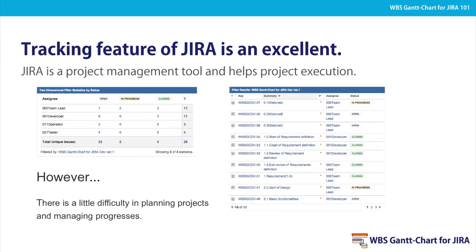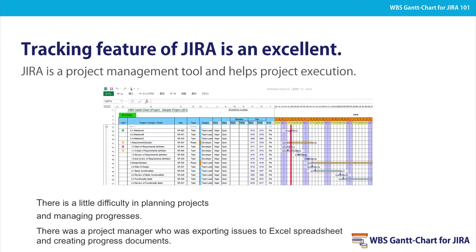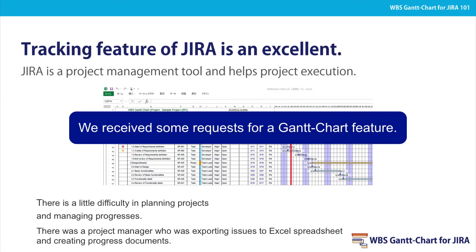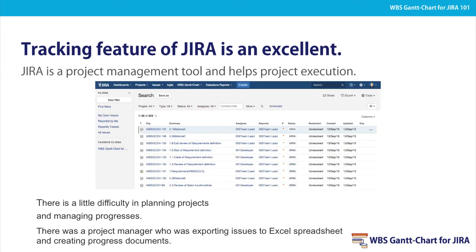However, there is a little difficulty in planning projects and managing progress. In one of our customers, there was a project manager who was exporting issues to Excel spreadsheet and creating progress documents. When trying to do progress management in JIRA, everything needs to be done in the issue navigator screen. In this case, it is hard to see and catch the relations of issues.